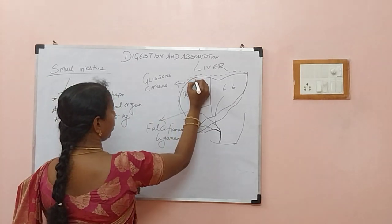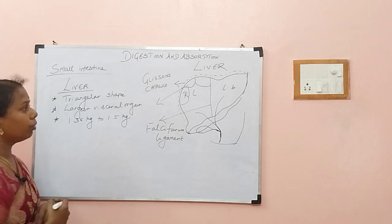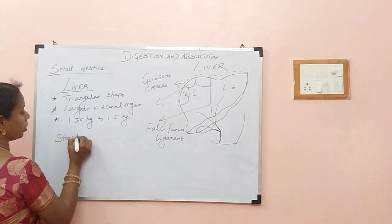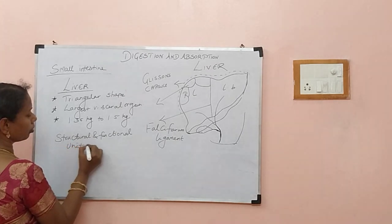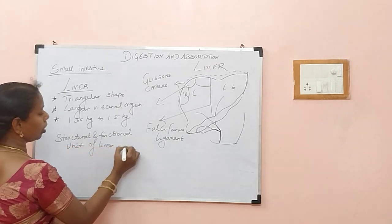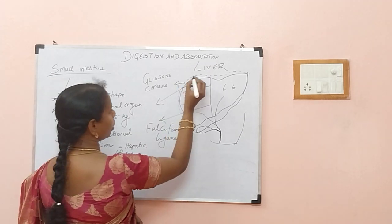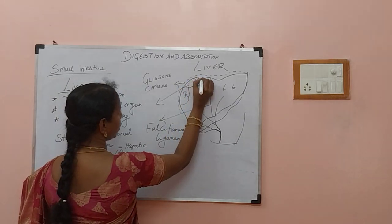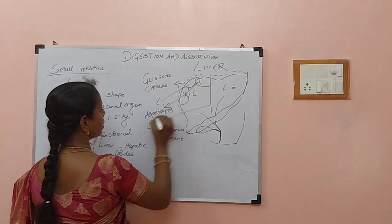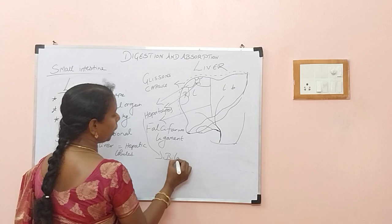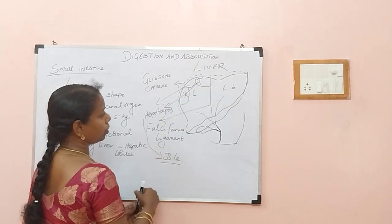These lobes contain hepatic lobules — this is very important. What is the structural and functional unit of the liver? It is the hepatic lobules. Inside the hepatic lobules, you find hepatocytes — the liver cells. These hepatocytes are engaged in the production of bile. Can you see the hepatic ducts here? There is a right hepatic duct and a left hepatic duct.